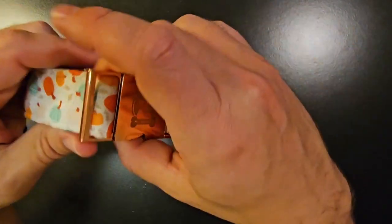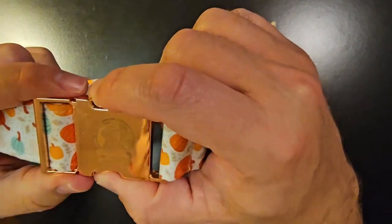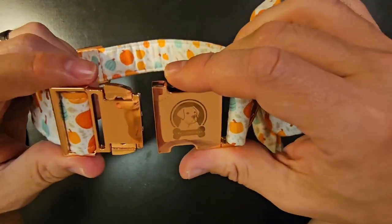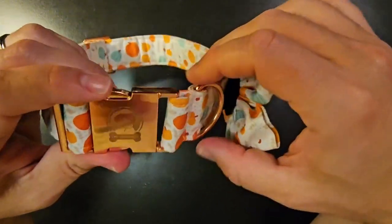Here's the clip with the company logo. To unclip it, you just pinch these together and pull it out. To clip it back once you've got it on the dog, you just push it in like that.